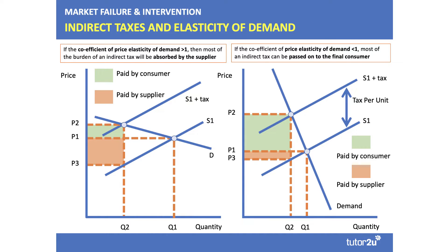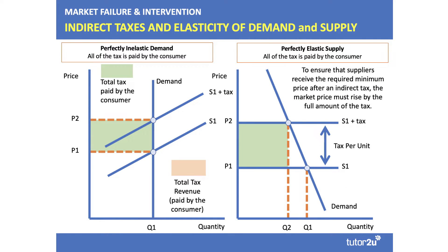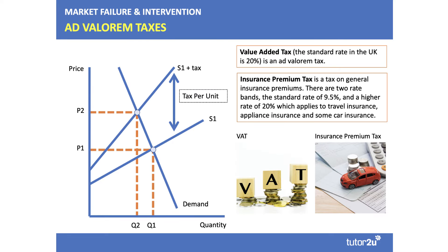Those previous examples are specific taxes — there's a parallel shift in the supply curve. Here's an example of an ad valorem tax, a percentage tax. VAT is a good example, as is insurance premium tax, where the amount of tax goes up the higher the supply price. So typically if you tax luxury items, 25% of £20,000 is a lot of money, but 25% of 50p is very little. The amount of tax goes up with price. It's important, if you get a question on percentage tax in the exam, to draw an ad valorem tax to show the examiner you know the difference.